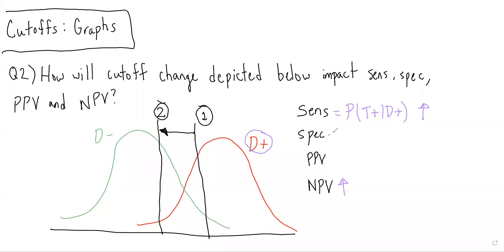For specificity, we remember this is the probability of having a negative test result given you do not have the disease. So among those without the disease, how many have a negative test result? How much of the area lies to the left of the cut-off?